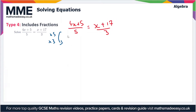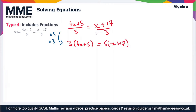We're going to be left with 3 lots of (4x + 5) which is equal to 5 lots of (x + 17). When we multiply by 3 on this side and 5 on this side, the 5s cancel so we're left with the 3, and likewise on the other side the 3s cancel so we're left with 5.